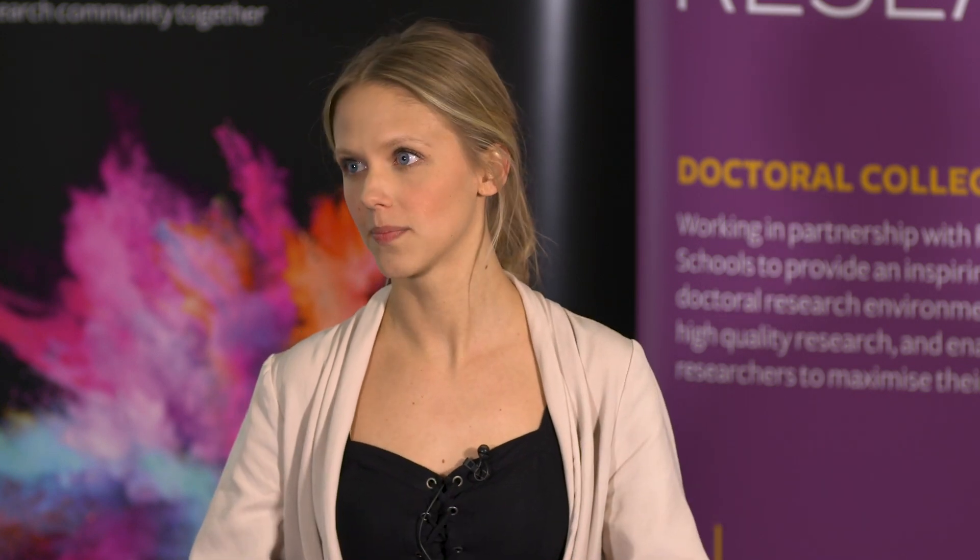One of the lesser known forms of carbon is a structure called fullerene. Carbons in fullerene molecules are usually arranged in pentagons and hexagons, and they can form hollow spheres, tubes or ellipsoids. I work with a fullerene molecule called C60, which is a spherical carbon cage that consists of 60 carbons and resembles a football, only it is 100 million times smaller.